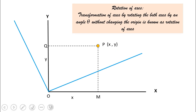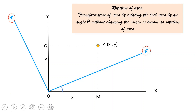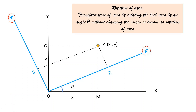Now let us rotate the axes by an angle theta, and let x-dash and y-dash be the new axes. Drawing perpendiculars to Ox-dash and Oy-dash, they meet at R and S respectively. Let OR be the distance x-dash and OS be the distance y-dash.